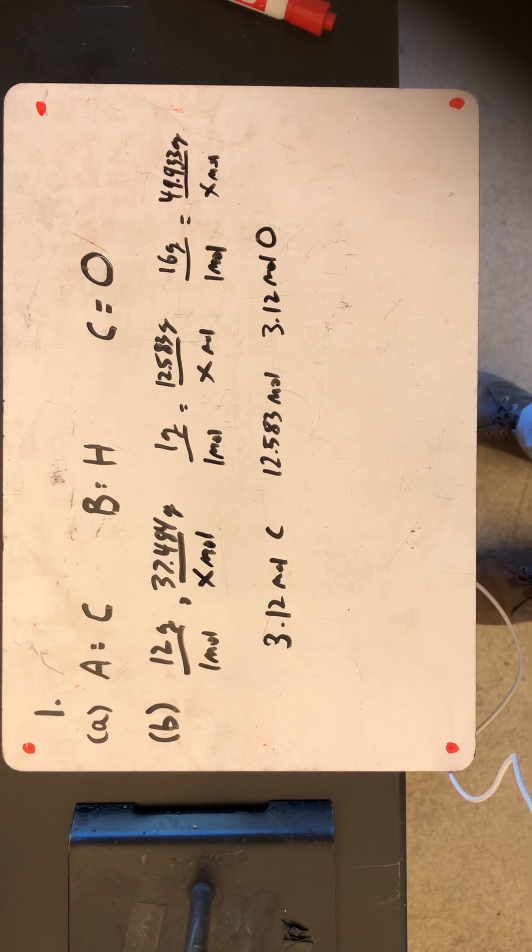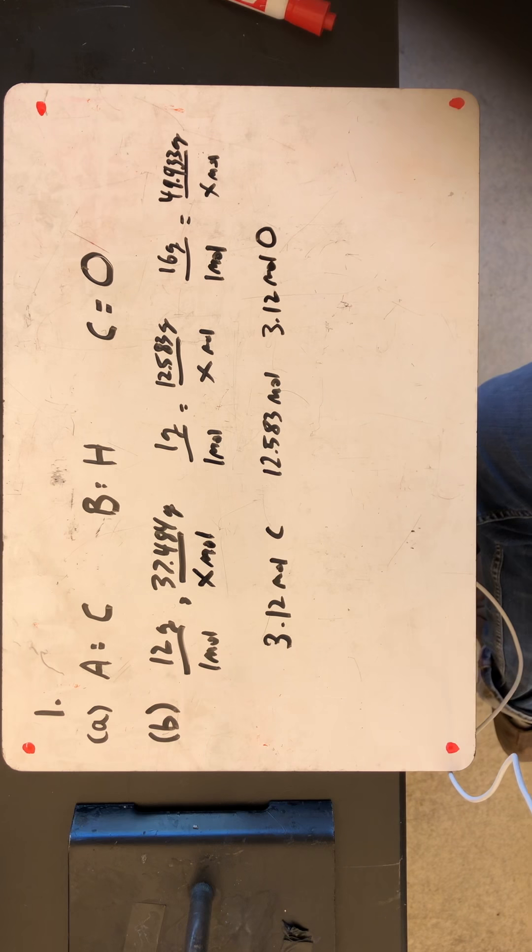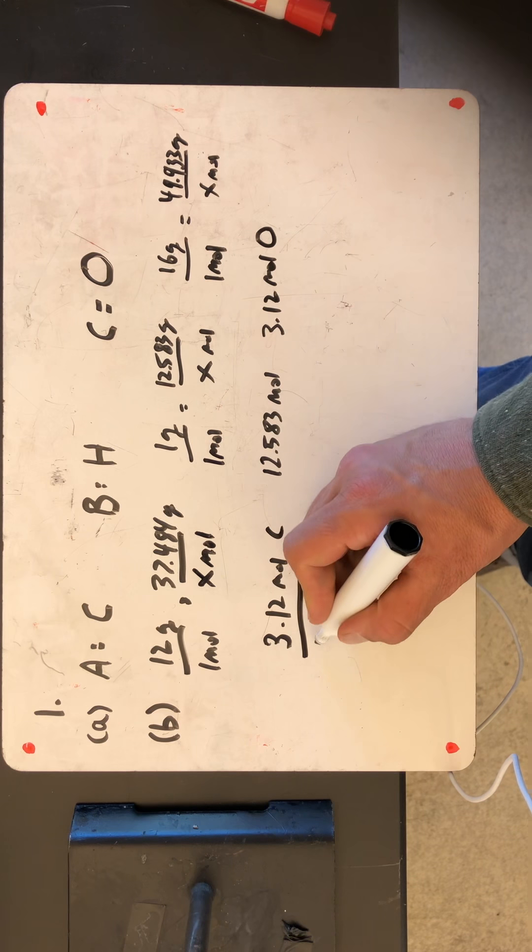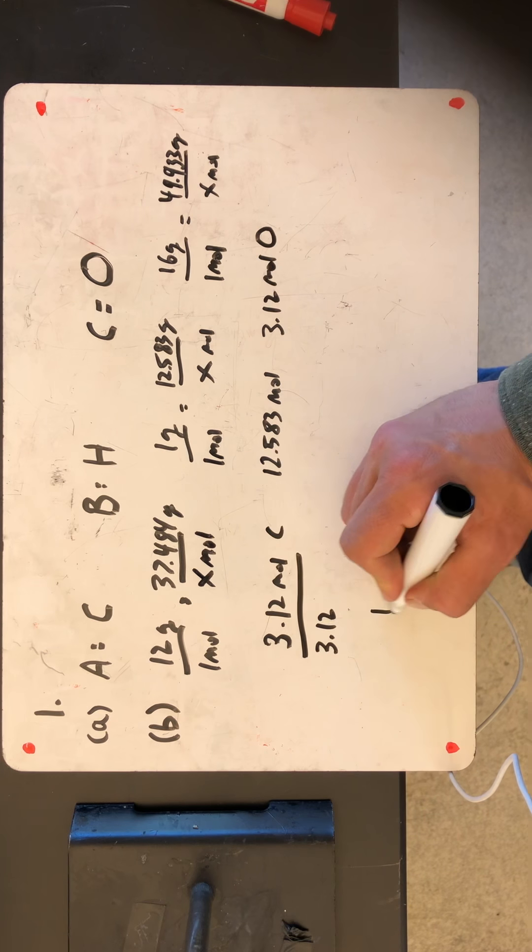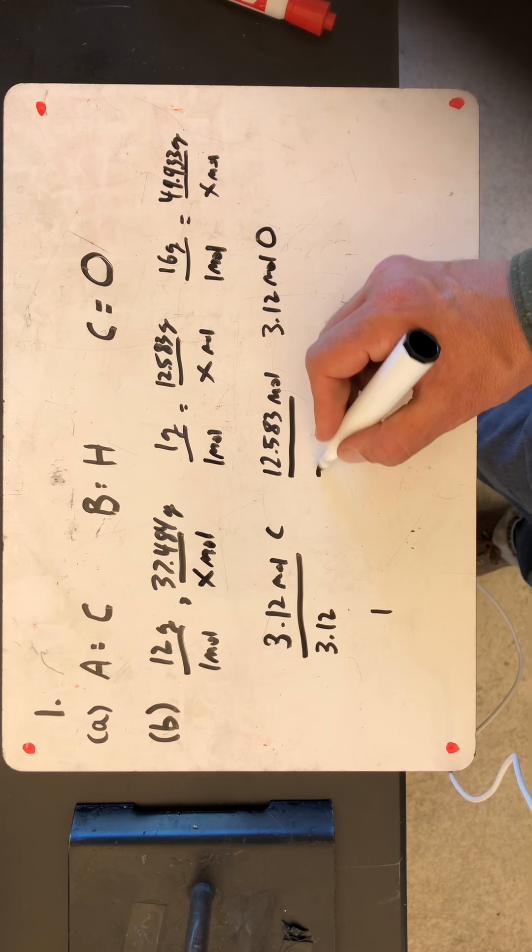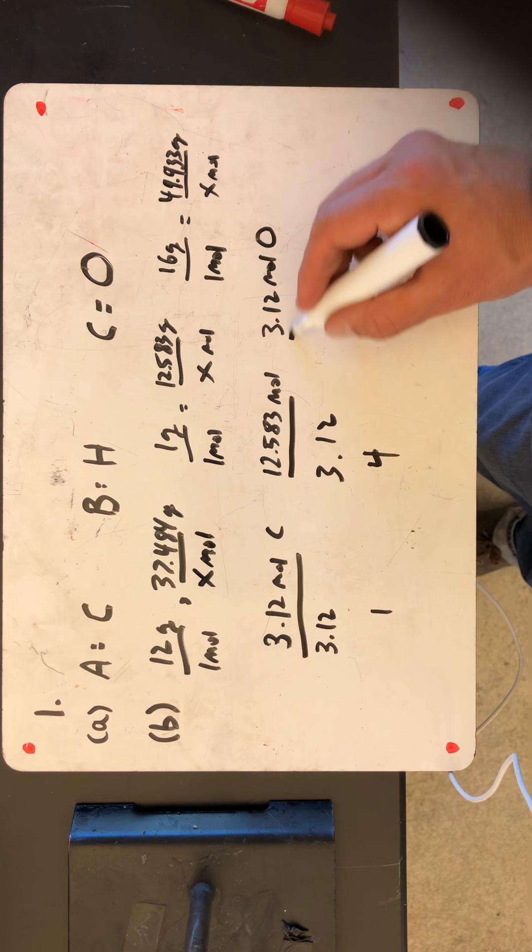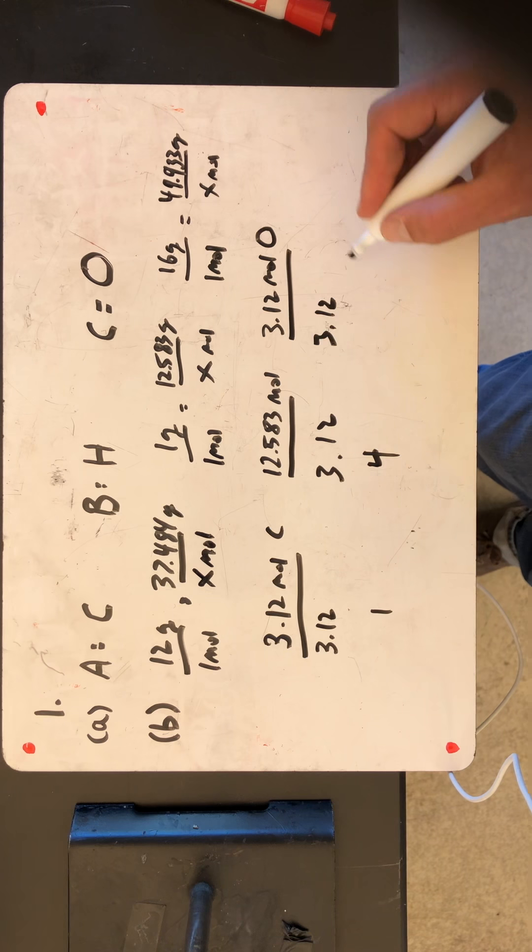And that is actually equal to the formula. But we wanna divide by the smallest. So 3.12, that's gonna be 1. So 3.12, that's gonna be 1. 3.12, that's gonna be 4. And 3.12, that's gonna be 1.